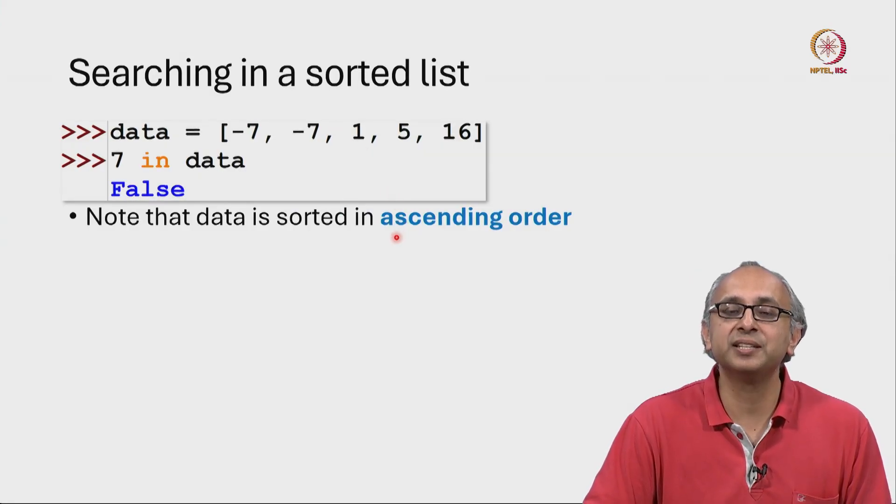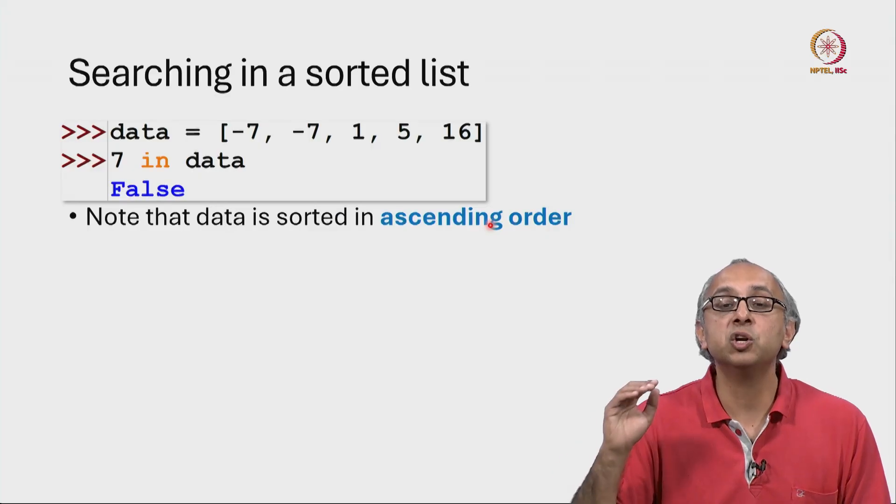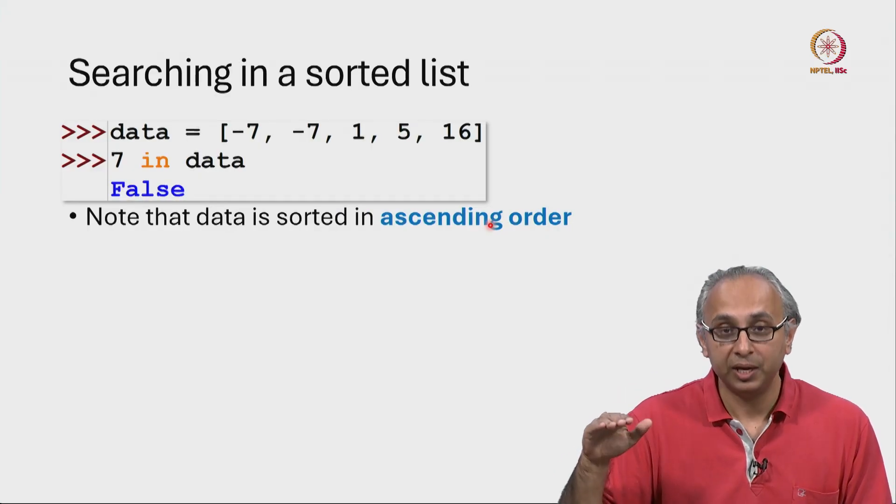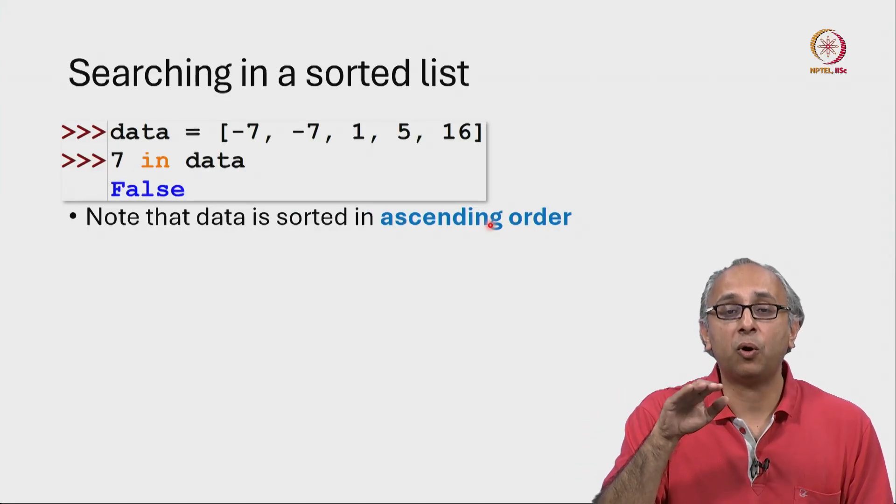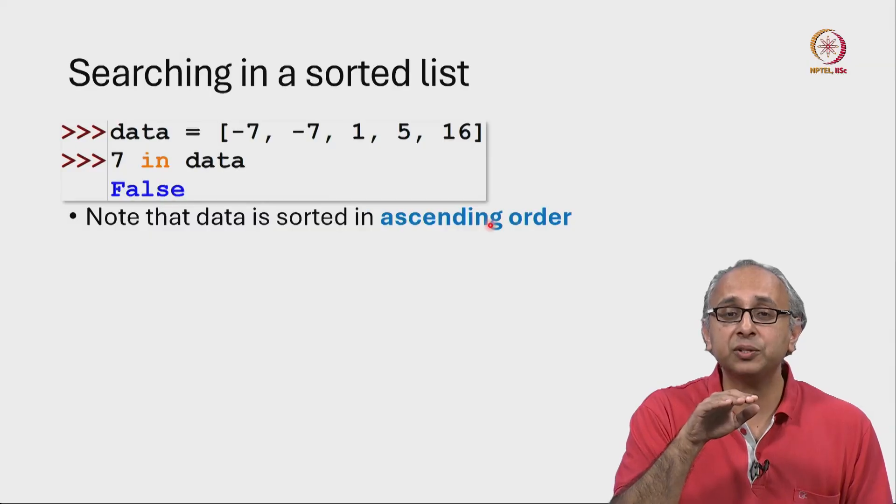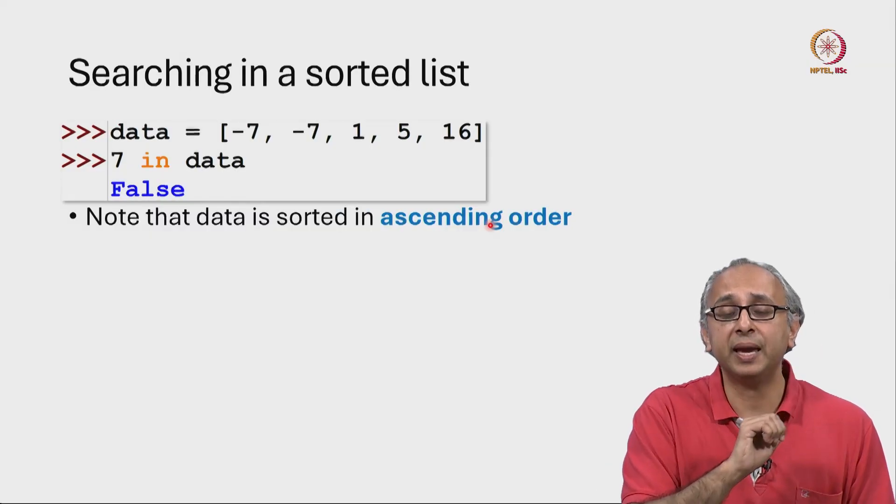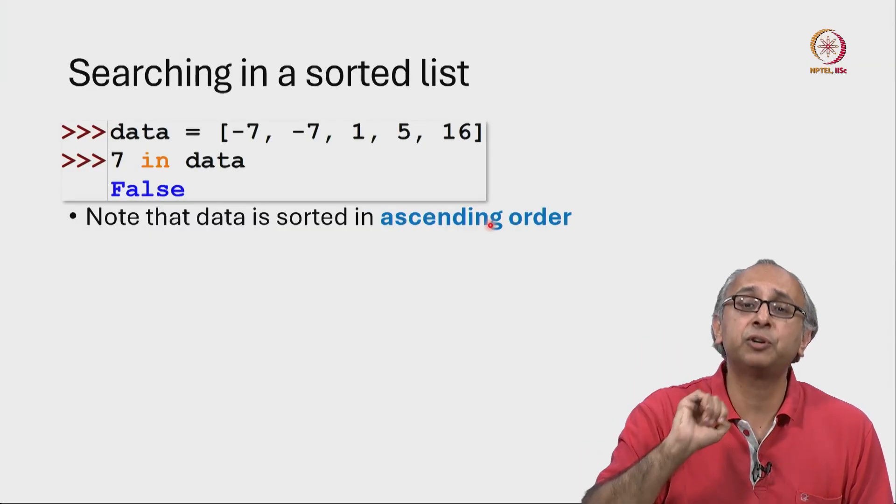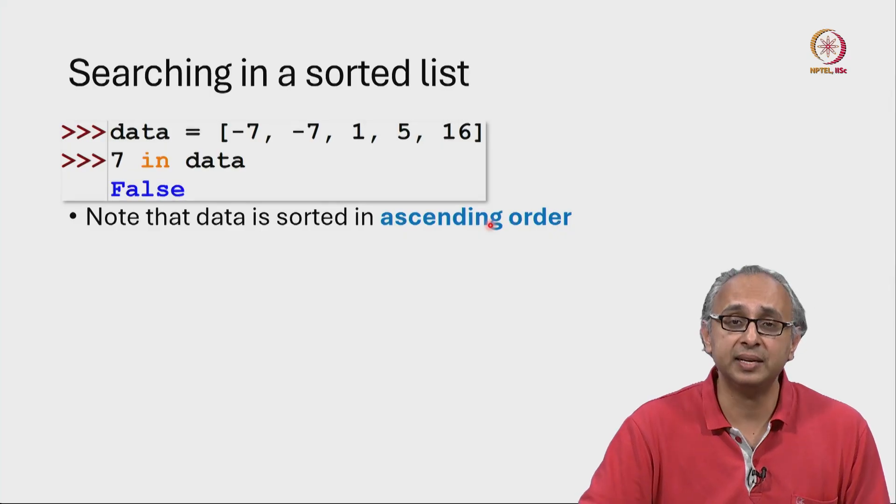So the values in a list that is in ascending order are non-decreasing. The values could go up, or they could settle down into a plateau and then go up again, but they can never decrease in ascending order.